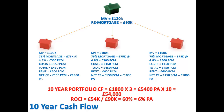So £150 a month means £1,800 per annum income from one single let property. Now we've got three of these, so that's £1,800 times three which is £5,400 per annum income from your portfolio.